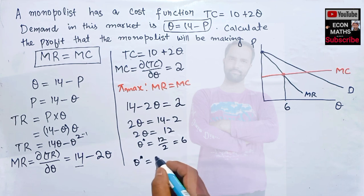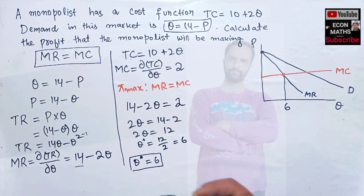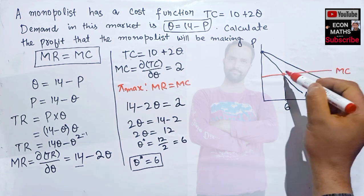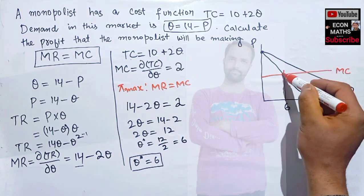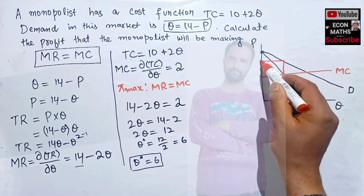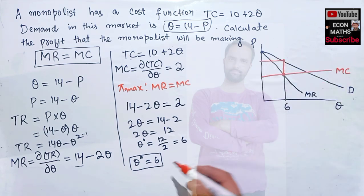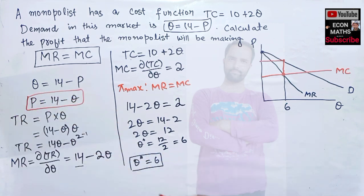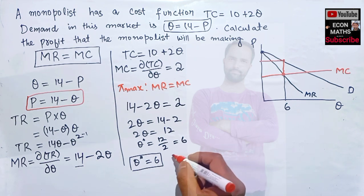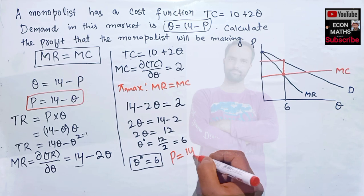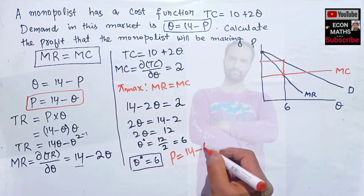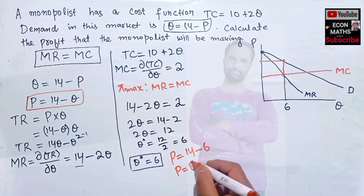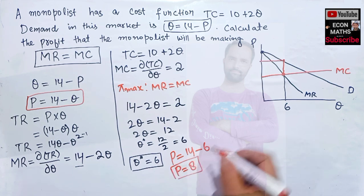Now we need to find the price corresponding to this quantity. We plug Q = 6 into our demand function: P = 14 - Q = 14 - 6, so the price P = 8. The profit-maximizing price is 8.